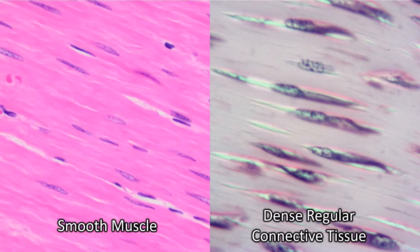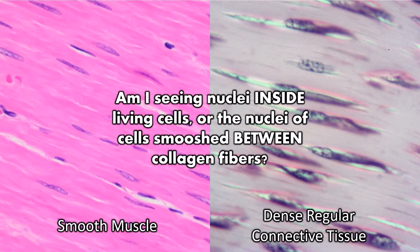The first thing you should ask yourself if you're trying to decide what you're looking at is: am I seeing nuclei inside living cells, which is what you see in smooth muscle? You see all these nuclei are located in the fibers because those fibers are living muscle cells. When you're looking at dense regular, you're seeing cells that have been smushed in between the non-living collagen fibers.